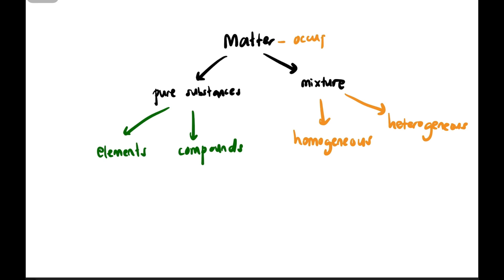So as we recap, matter is anything that occupies space and has mass. There are two types: pure substance and mixture. Pure substance can be further categorized into elements and compounds. Elements must have one type of atom. Compounds have more than one type of atoms.